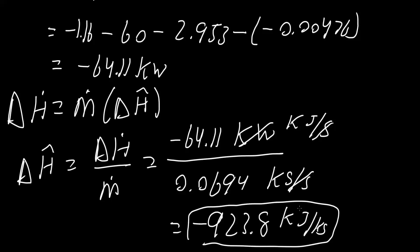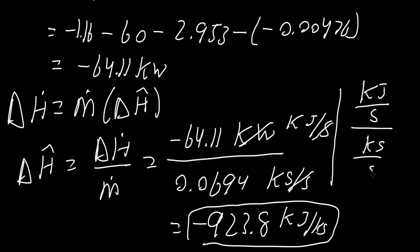A quick check to verify the units are really kilojoules per kilogram: we had kilojoules per second divided by kilograms per second. Kilojoules per second divided by kilograms per second is the same as kilojoules per second times second per kilogram — the seconds cancel — giving kilojoules per kilogram. And that's all we need to do for this problem.